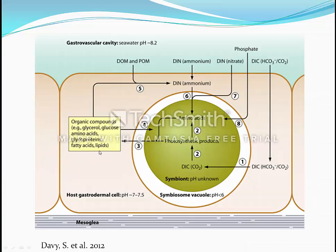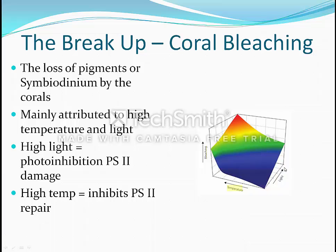Symbiodinium also produce mycosporine-like amino acids that can protect the coral cells from UV radiation. Although the process is still being studied, it appears that the photosymbionts also help in the calcification process. Coral bleaching is the loss of photosynthetic pigments or of the Symbiodinium themselves, and it is believed to be a combined effect of high light intensity and high temperatures that leads to this detrimental effect.